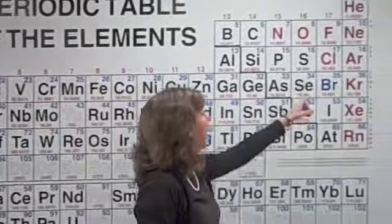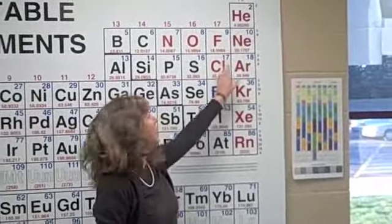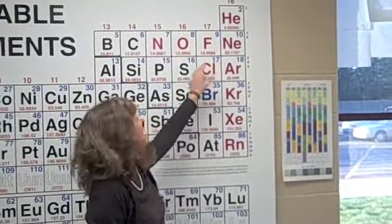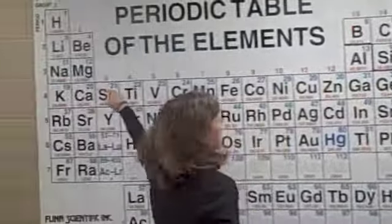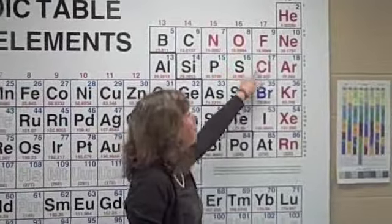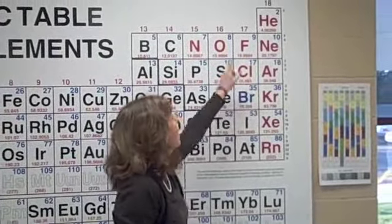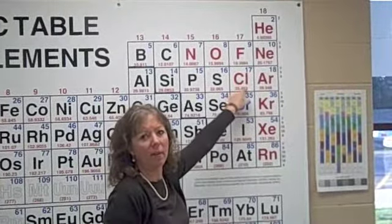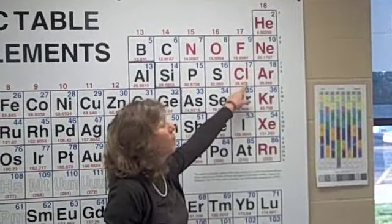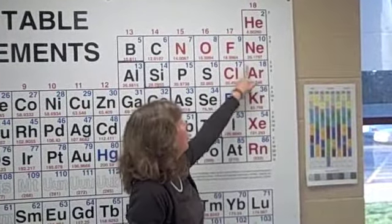Now chlorine, on the other hand, is all the way over here. It has the S2 and p5, the 3p5 electrons in its outer shell. If it would gain one more electron, it will have 18 electrons and become isoelectronic with argon.